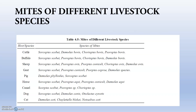In the case of cattle, the main mites are Sarcoptes scabiei, Demodex bovis, Chorioptes, and Psoroptes. In the case of dogs, Demodex canis is very important, Otodectes cynotis is mainly found in the ear, and Sarcoptes is also found in the skin.